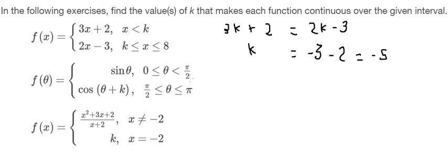So we put sine pi over 2 equals cosine of pi over 2 plus k.